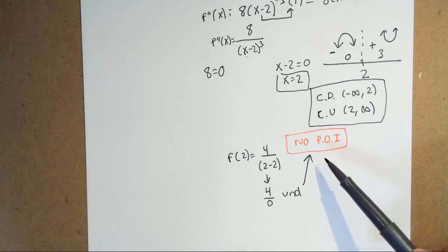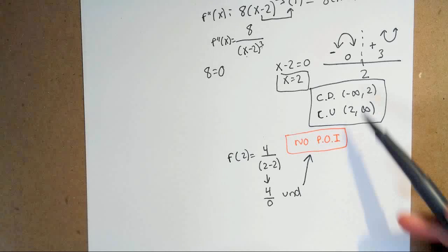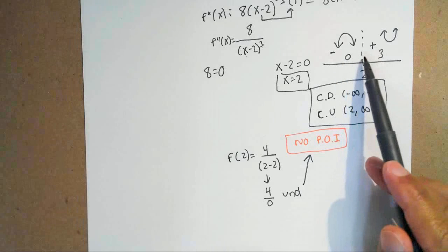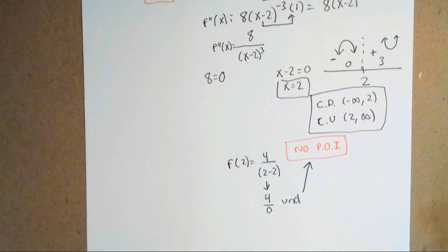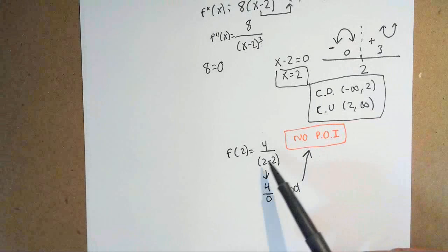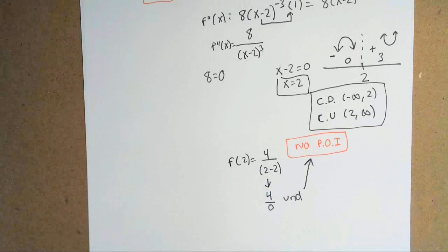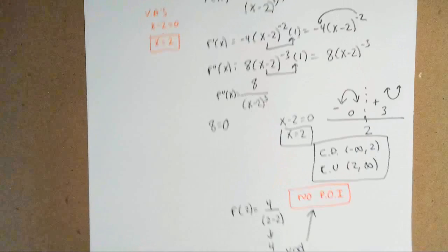When dealing with concavity, make sure you work with your second derivative and plug all test values into your second derivative. If you do have a point of inflection, plug it into your original equation to get the real point. Now this brings us to our last example: how to work with the second derivative test.